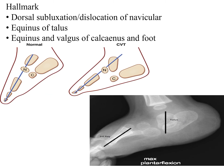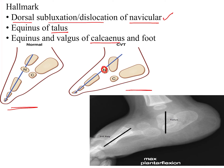This is a normal pediatric foot and this is a foot seen in a CVT patient. We need to look at three things: the navicular, the talus, and the calcaneum bone. In the deformed foot, the navicular is dorsally subluxed or dislocated — it has displaced dorsally, so there is a dorsal subluxation or dislocation of the navicular.